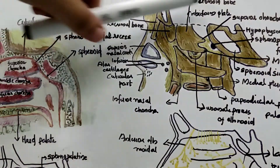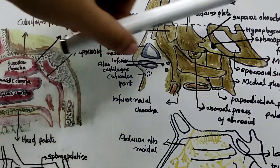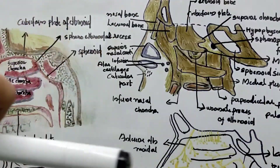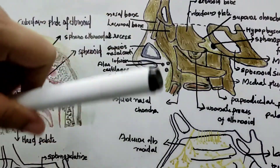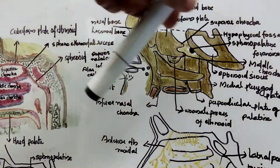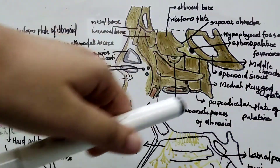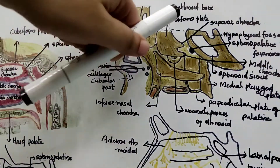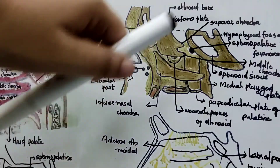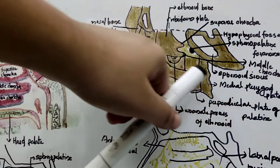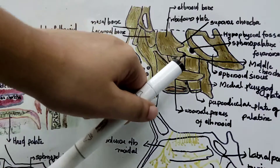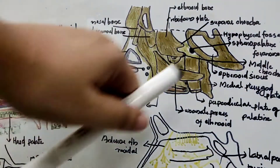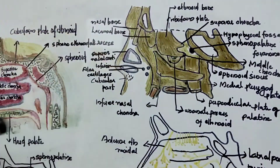Now we will discuss the skeleton of the lateral wall. It is partly bony, partly cartilaginous, and some part is made of soft tissue. The bony part contains the nasal bone, the lacrimal bone, the labyrinth of the ethmoid bone with the superior and middle conchae, and the inferior conchae which is made of spongy bone, and also the perpendicular plate of the palatine with its orbital and sphenoid processes.